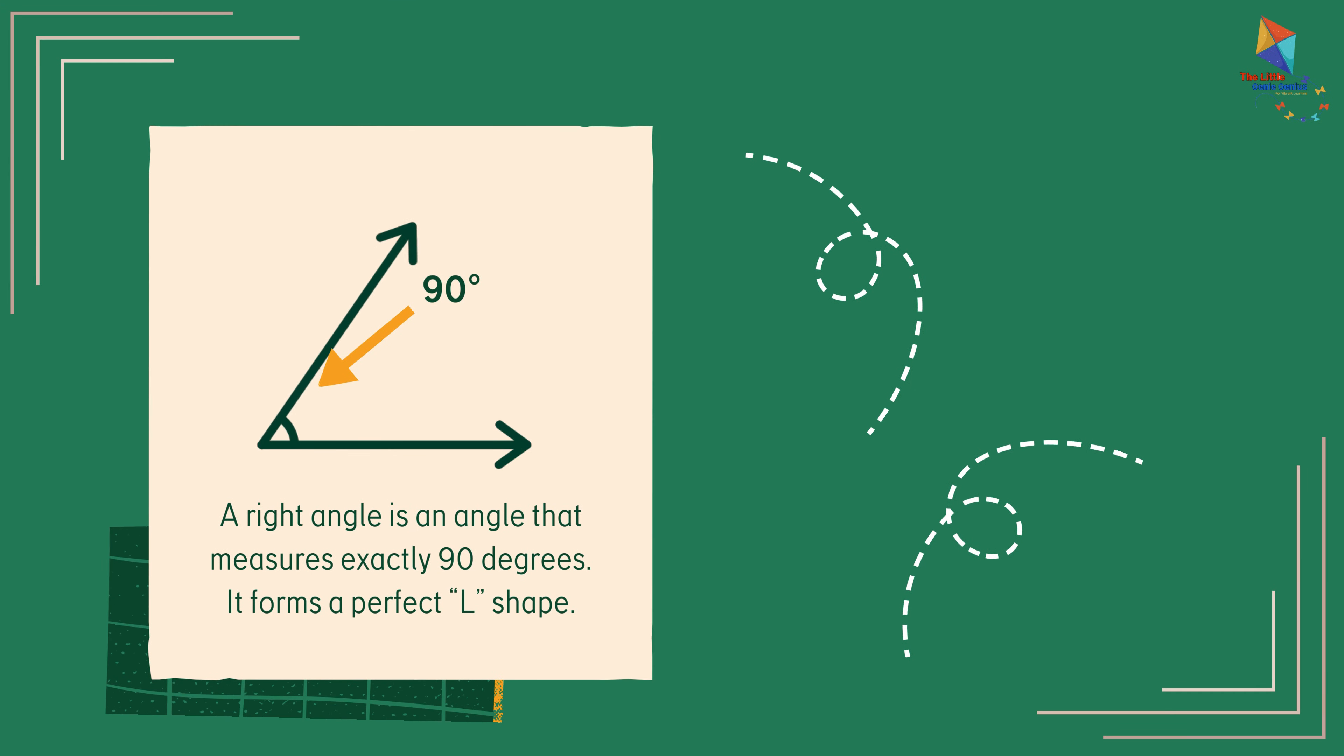A right angle is an angle that measures exactly 90 degrees. It forms a perfect L shape.